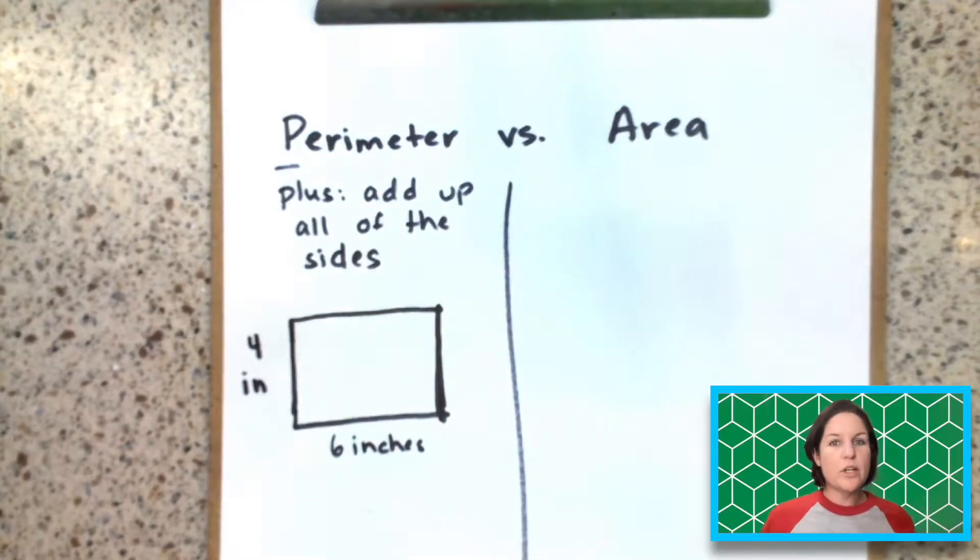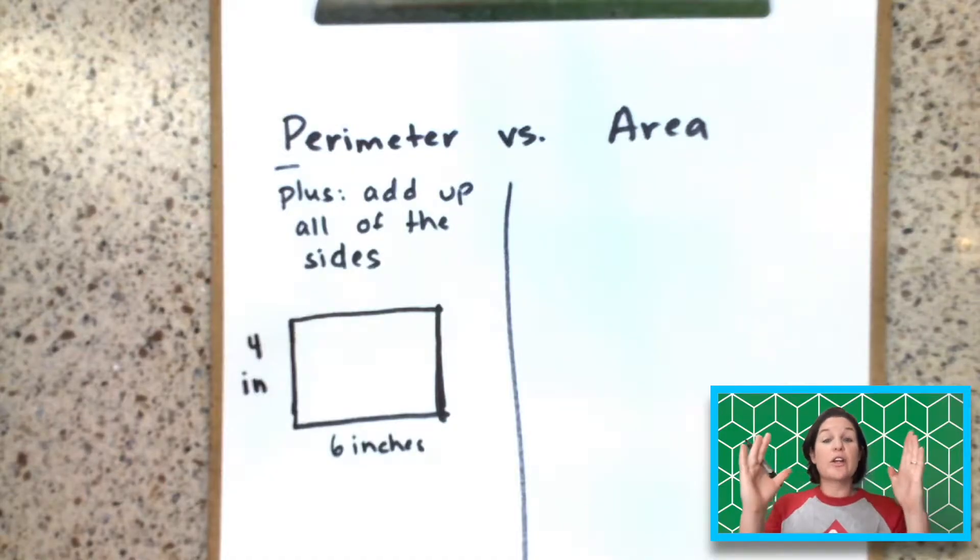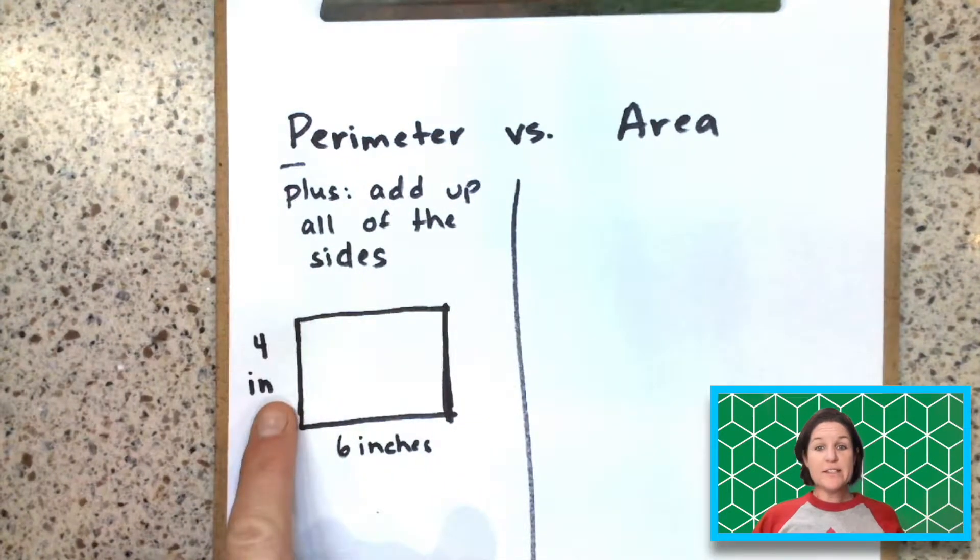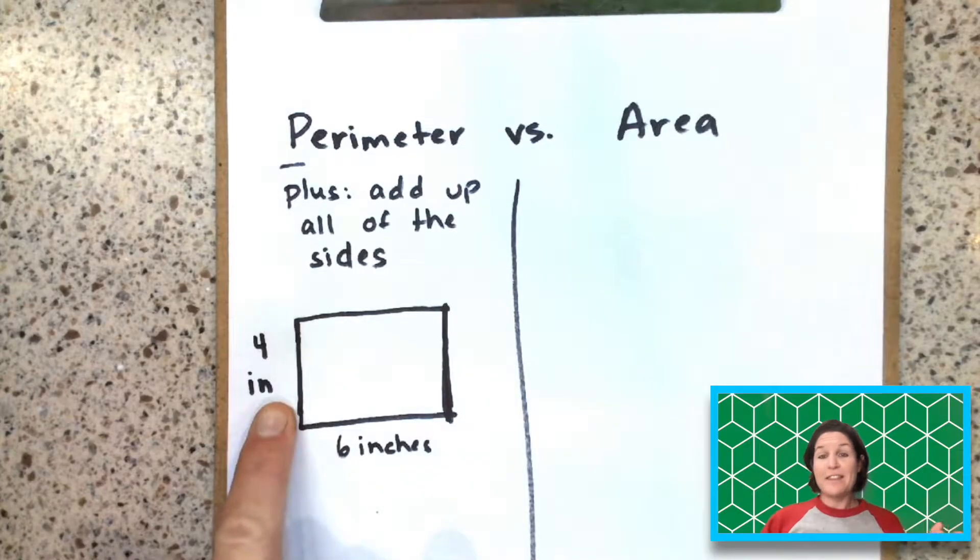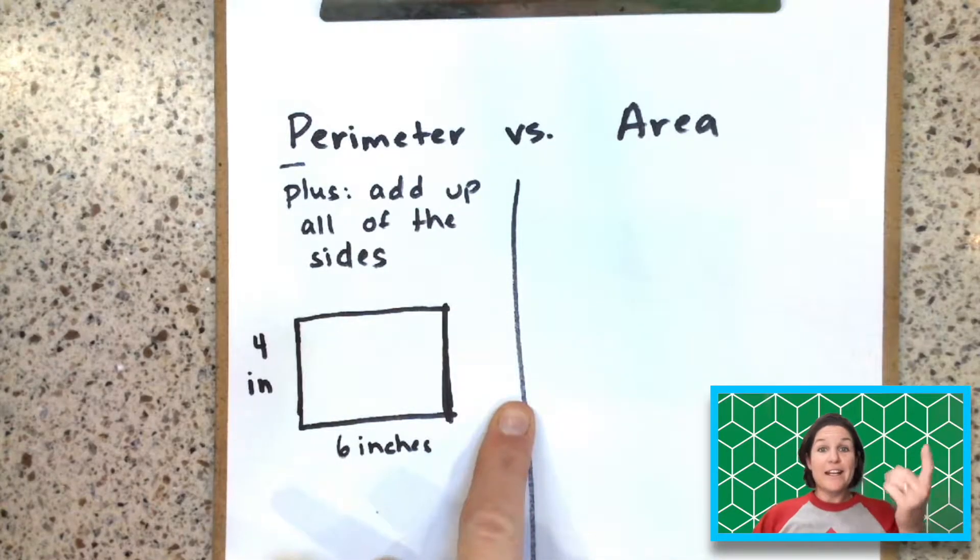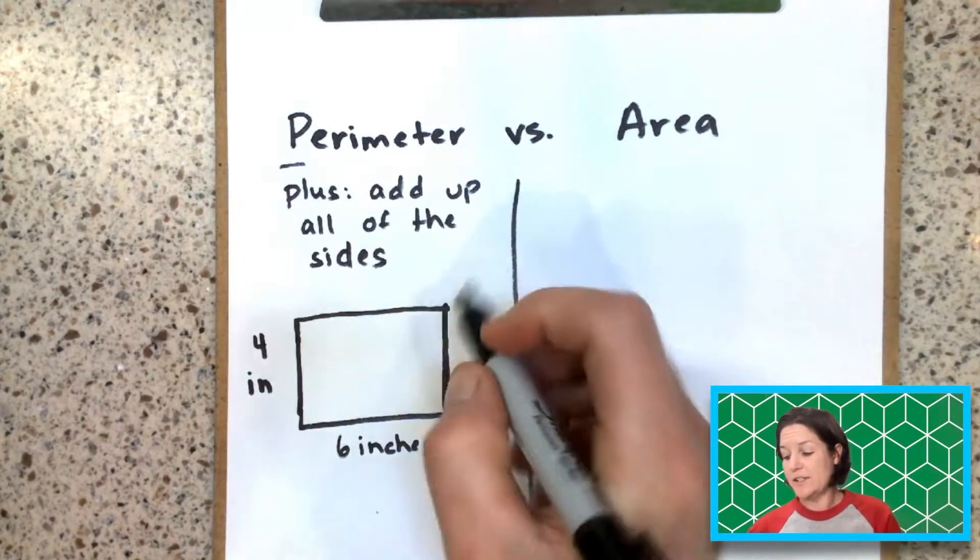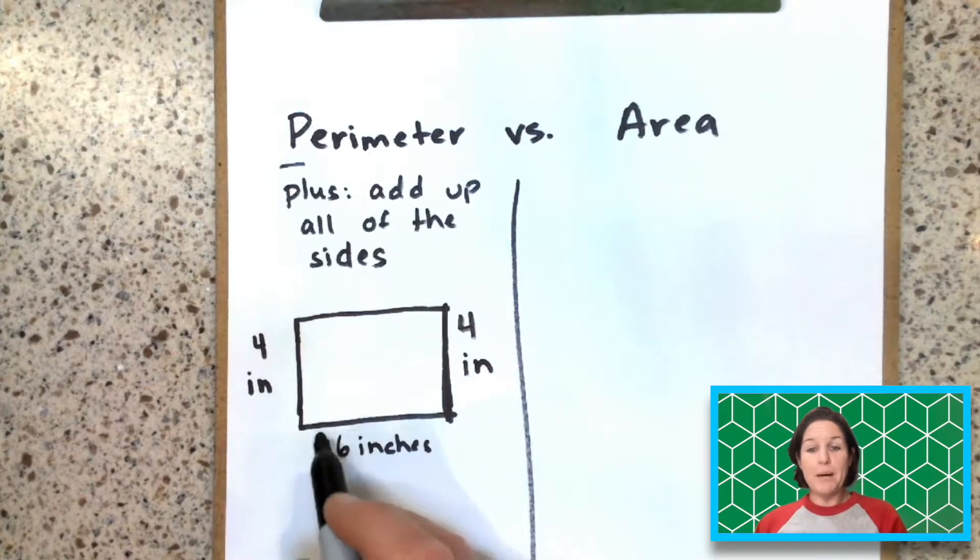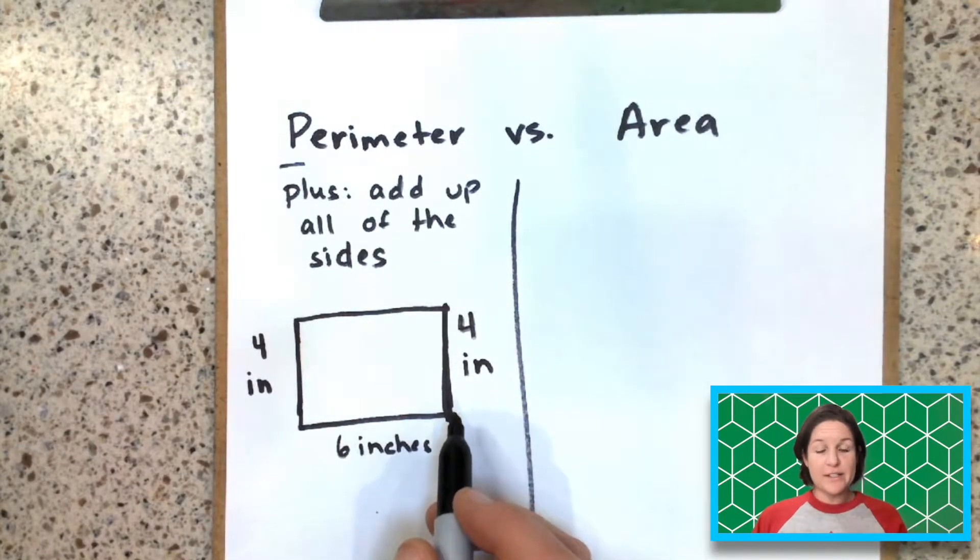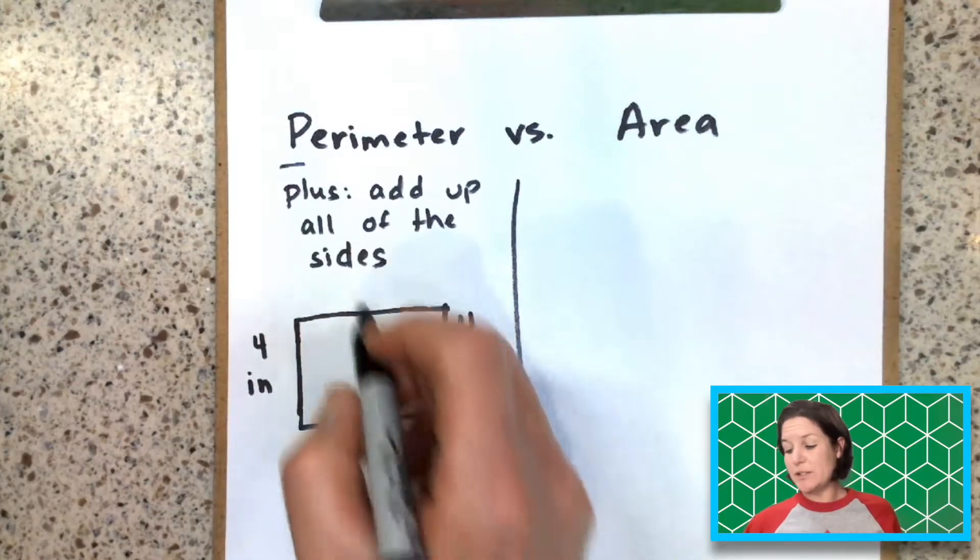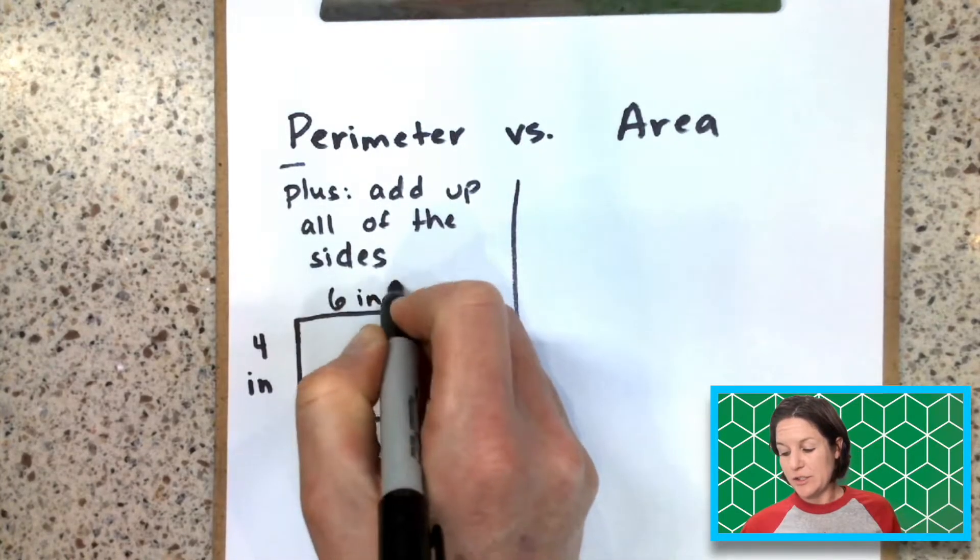Well, let's think about what we know about rectangles. We know that the opposite sides are congruent or equal, right? Meaning if this side right here is four inches, then the opposite side is also four inches. It's congruent. And if the bottom is six inches, we know that the top is also going to be six inches.